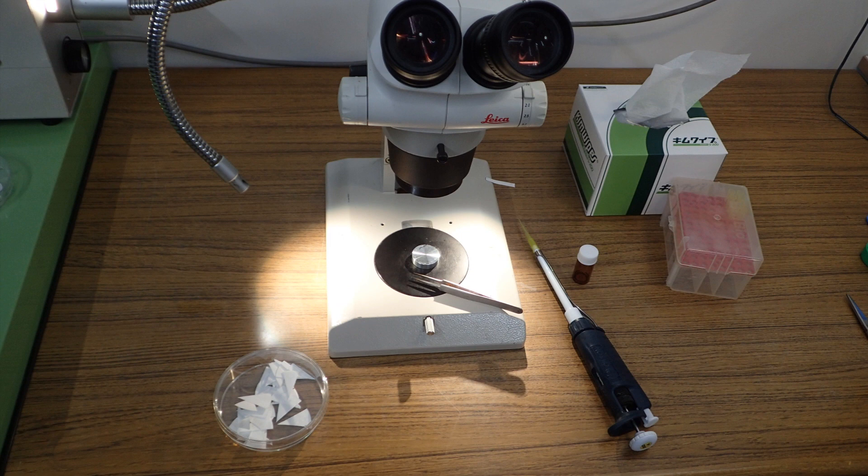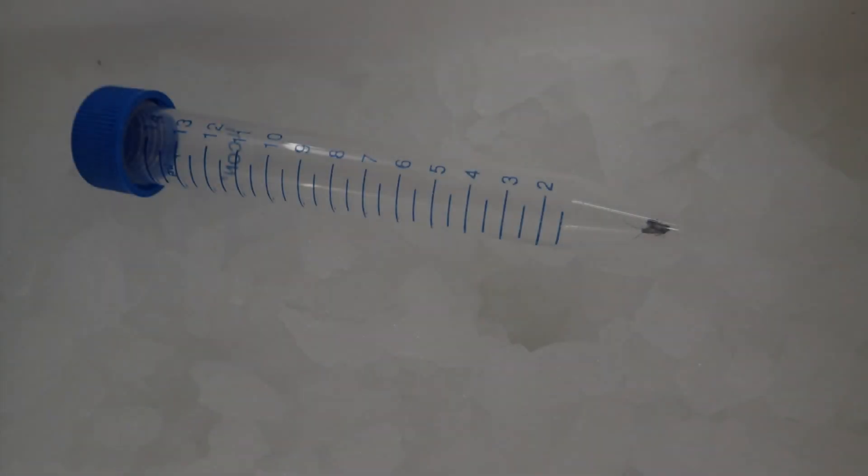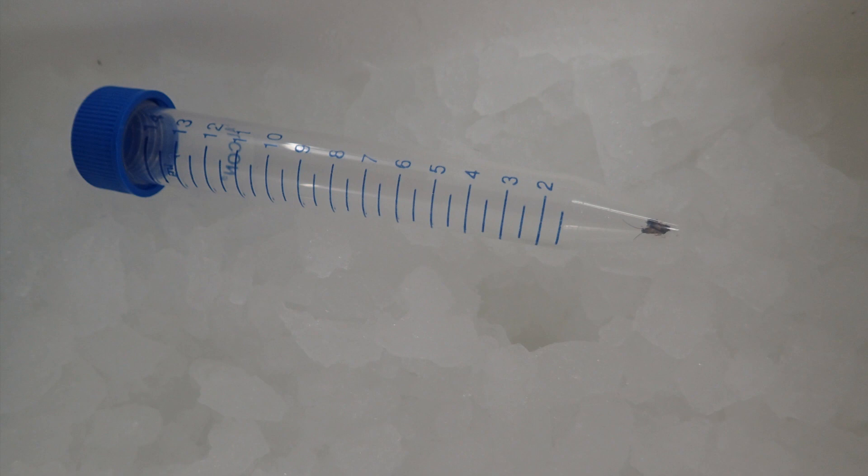Place the thawed nanosuit solution in a place where it is easy to work. For living insects, put them in a vial and anesthetize on ice.